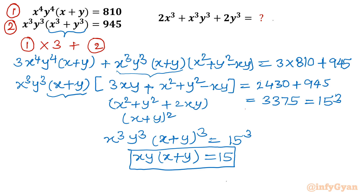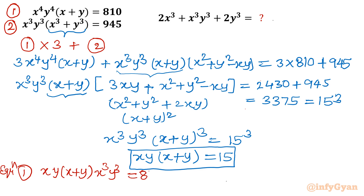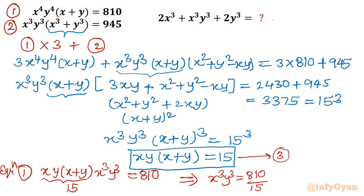Now from Equation 1, x⁴y⁴(x + y) = 810, I can rewrite this as [xy(x + y)] · x³y³ = 810. Substituting xy(x + y) = 15 from Equation 3, I get 15 · x³y³ = 810, so x³y³ = 810 ÷ 15 = 54. This is Equation 4.